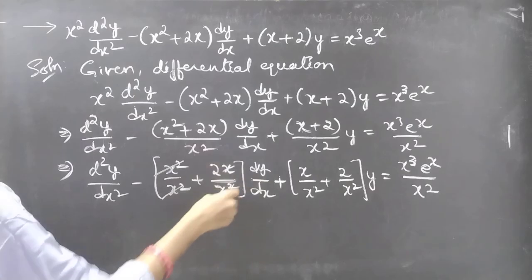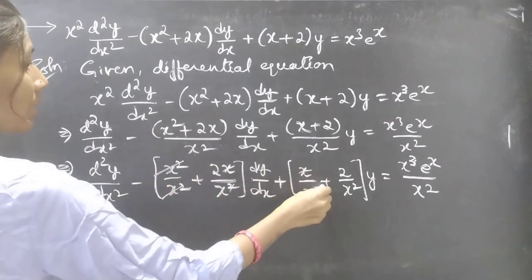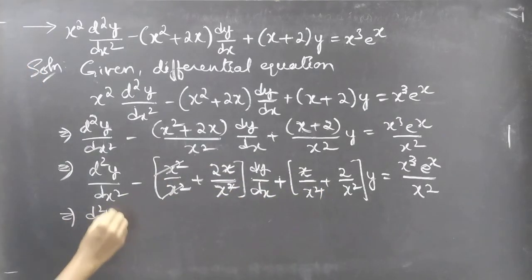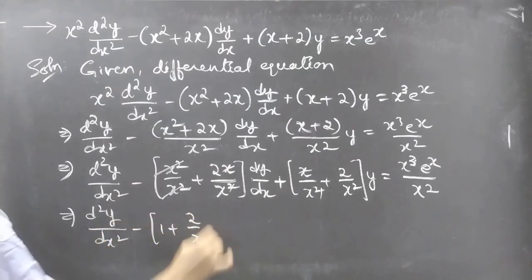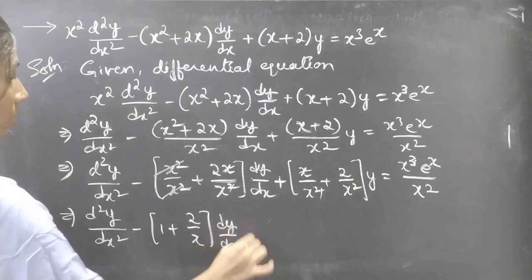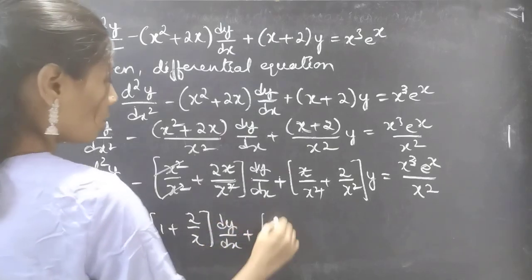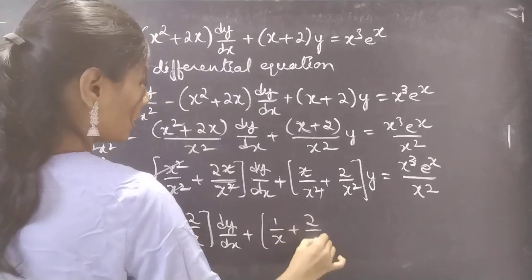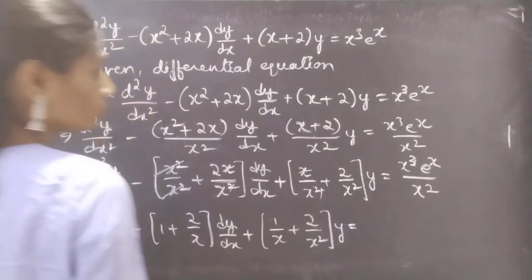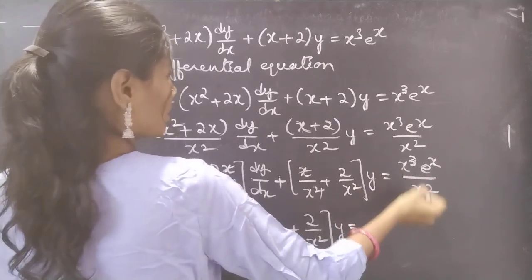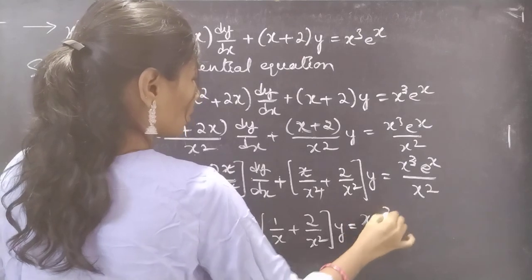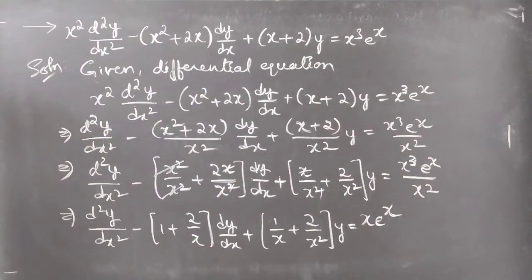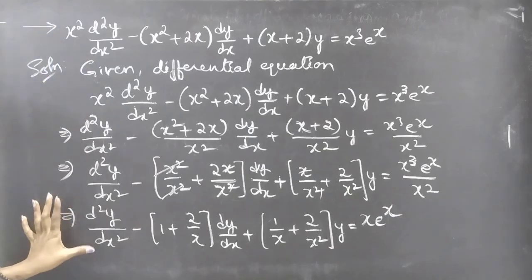After cancelling terms — x squared cancels in the first fraction and x cancels in the others — we get d²y/dx² minus (1 plus 2/x) times dy/dx plus (1/x plus 2/x²) times y equals x times e to the power x. We have now reduced the given differential equation to standard form.